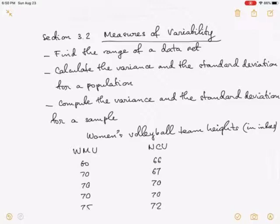Now we continue with section 3.2. We measure the variability of the data. By the end of this section, you will be able to find the range of a data set, calculate the variance and the standard deviation for a population, and compute the variance and the standard deviation for a sample.